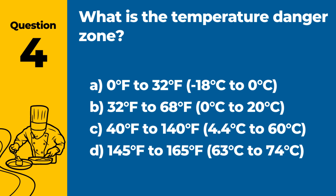Question 4. What is the temperature danger zone? Answer: C. 40°F to 140°F (4°C to 60°C). The temperature danger zone is the range in which foodborne bacteria can grow rapidly, increasing the risk of foodborne illness.